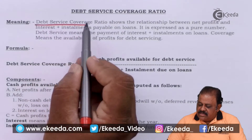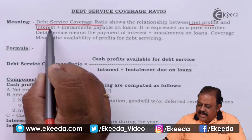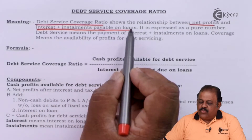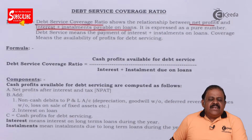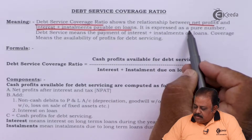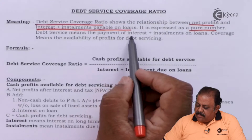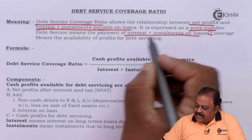Debt service coverage ratio shows the relationship between net profits and interest plus installment payable on loans. It considers the loan installment or EMI, which includes the interest portion on the balance unpaid amount of the loan plus some amount of principal — that is, principal plus interest is referred to as loan installment. It is expressed as a pure number.